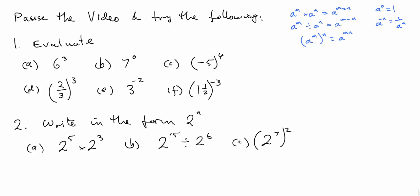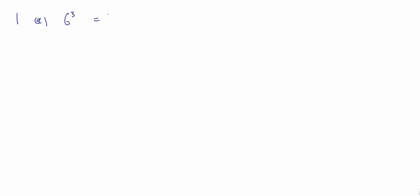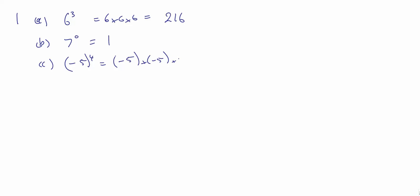Pause the video and try the following problems, after which I will show you how to do them. 6 cubed is 6 times 6 times 6, which is 36 times 6, which is 216. 7 to the power of 0 is 1, as any number to the power of 0 is 1. And part C, minus 5 to the power of 4 is minus 5 times minus 5 times minus 5 times minus 5. We have 4 minuses, which gives a plus, and 5 times 5 times 5 times 5 is 625.